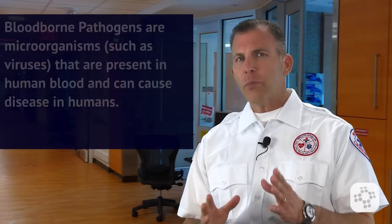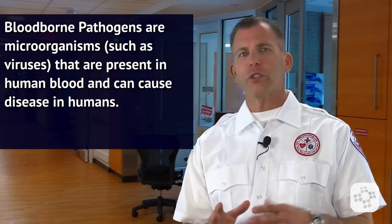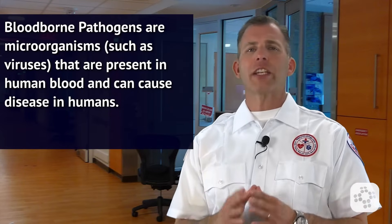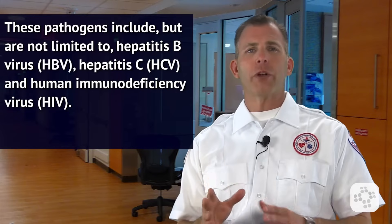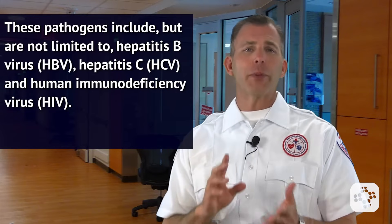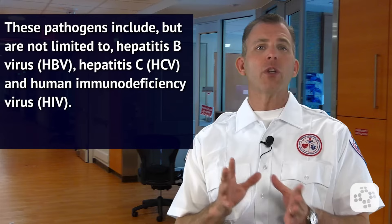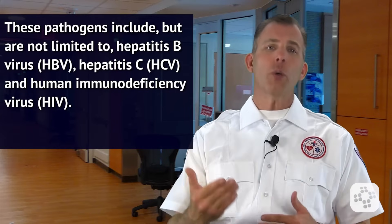You may be wondering to yourself, how does one get sick with a bloodborne pathogen? Well, bloodborne pathogens are microorganisms, such as viruses, that are present in human blood and can cause disease in humans. They include, but are not limited to, Hepatitis B, Hepatitis C, and the human immunodeficiency virus we know as HIV.